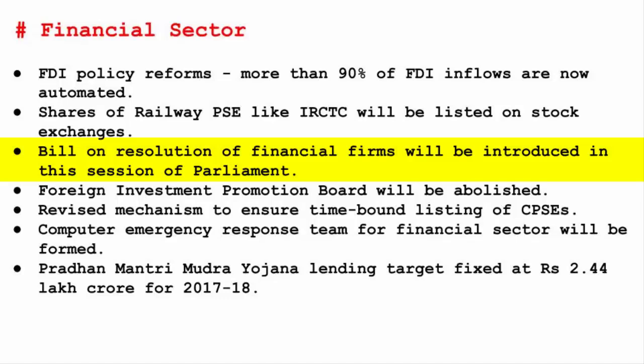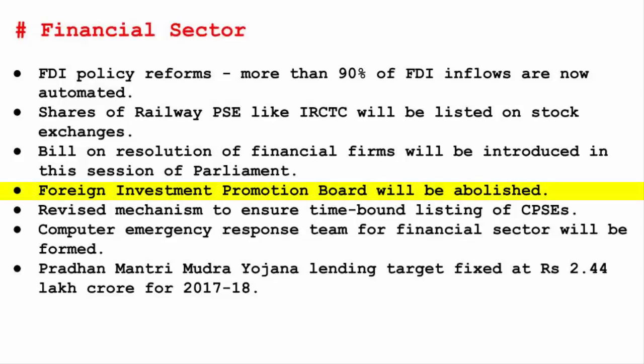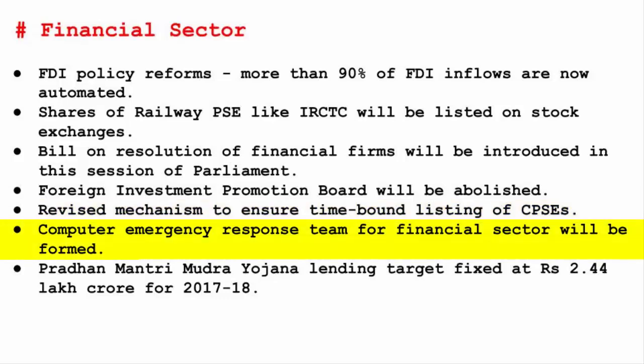A bill on resolution of financial firms will be introduced in this session of Parliament. The Foreign Investment Promotion Board (FIPB) will be abolished — since 90% of FDI is now on the automatic route, there isn't room for a manual review board. A revised mechanism will ensure time-bound listing of CPSEs — Central Public Sector Enterprises, also known as PSUs. Just as the government plans to list railway company shares on the stock market, it also plans to do the same with other PSUs, unlocking their true market value for big investment decisions.